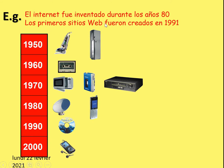What tense are 'fue' and 'fueron'? You might have said imperfect, but can you see an 'aba' or 'ía' here? No, we can't. Although I'm saying 'was' and 'were', which normally signals imperfect, when something happened once as a one-off — the CD wasn't invented multiple times during the 90s, it was invented once — then it's the preterite tense. That's why we're not saying 'el internet era inventado', because it wasn't invented several times or over a very long period of time.